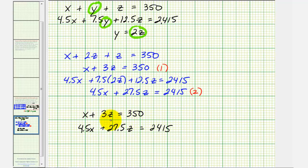To solve this system, let's solve the first equation for x and then perform substitution into the second equation. Subtracting 3z from both sides gives us x equals 350 minus 3z.